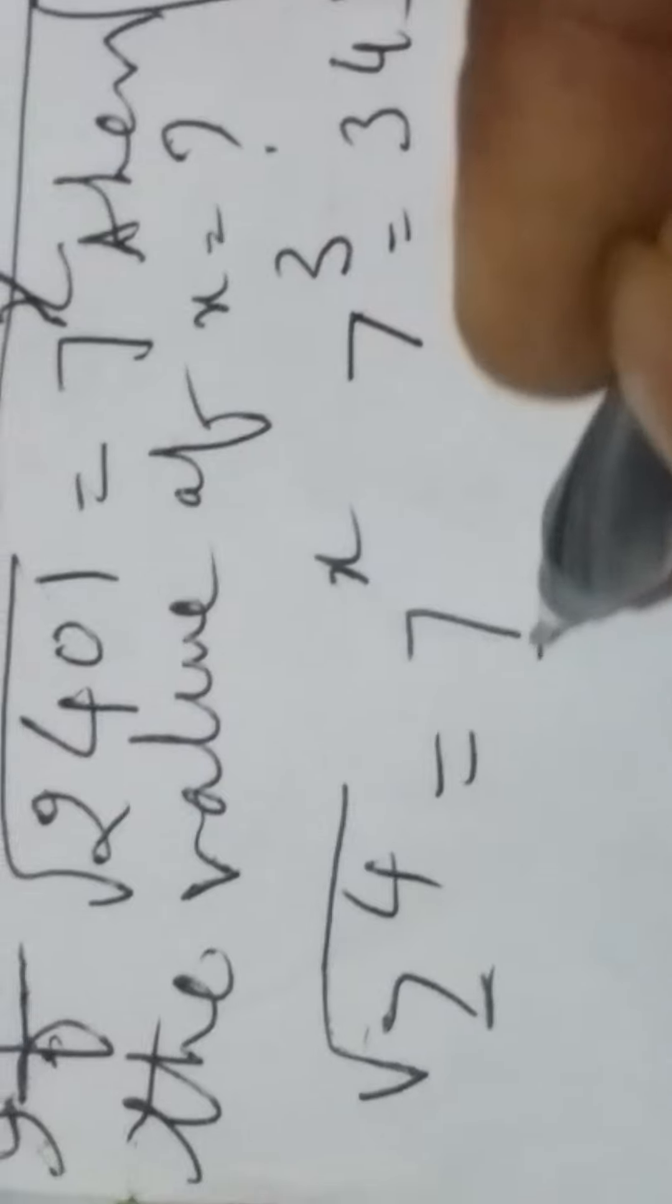If you don't know, do like this process. So you know here, directly writing here: 7 to the power 4 is equal to 7 to the power x. So make the bases equal, then powers will get equal results. Now root cancel.